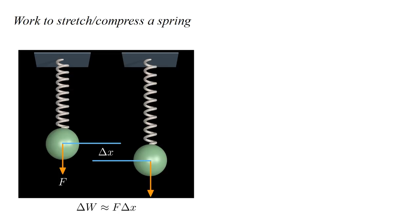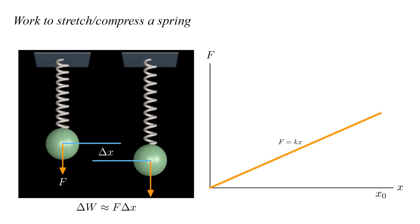This is approximate because the force changes as the spring stretches. If delta x is very small, this change is very small and the approximation is very good. The force is, ideally, given by Hooke's law: f equals a spring constant k times x. The small amount of work, f times delta x, is the area of the green rectangle.